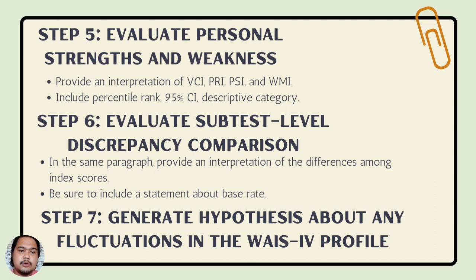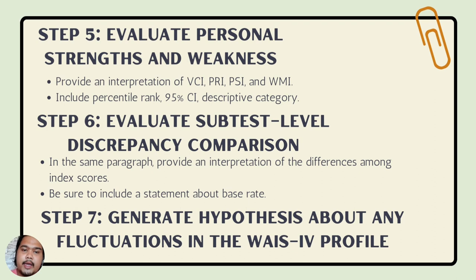Step 6: Evaluate subtest-level discrepancy comparisons. In the same paragraph, provide an interpretation of the differences among index scores and be sure to include a statement about the base rate. This is where you include the significant differences among index scores, such as whether the PSI score was higher than the VCI or PRI, or whether the PSI is much higher than the WMI, and so on.